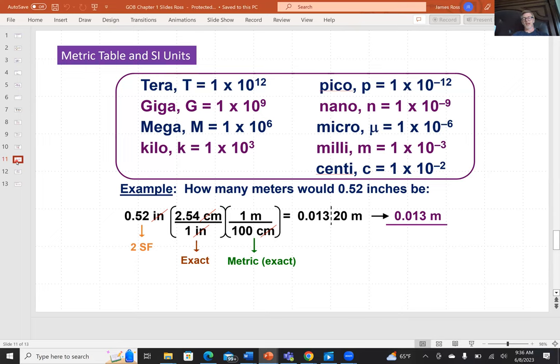Metric table and SI units. SI is an acronym for System Internationale or International Systems. I would learn these in pairs. So I would learn tera and pico together. Tera is 1 by 10 to the 12, or trillion. Pico is 1 by 10 to the negative 12, or trillionth. Giga is 1 by 10 to the 9, or billion. Nano is 1 by 10 to the negative 9, or billionth. Mega is 1 by 10 to the 6, or million. Micro is 1 by 10 to the negative 6, or millionth. Kilo is 1 by 10 to the 3, or thousand. Milli is 1 by 10 to the negative 3, or thousandth. And then the odd one out, centi, is 1 by 10 to the negative 2, which is hundredth. These are not all the metric units in the table, but these are the commonly used ones that I would commit to memory.